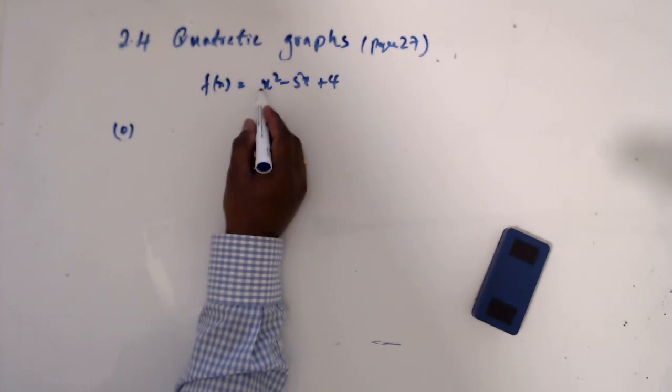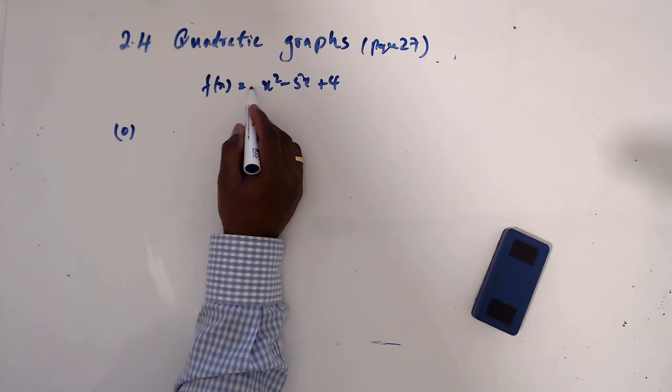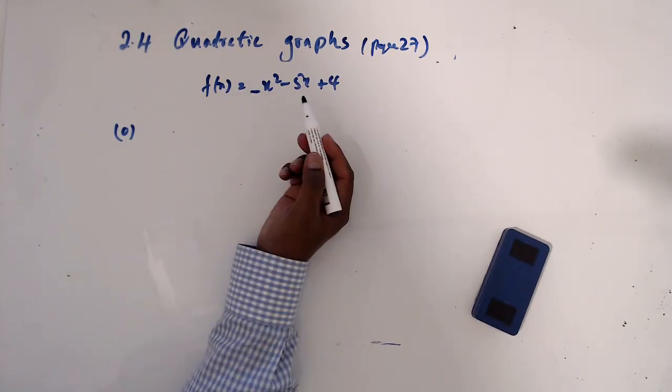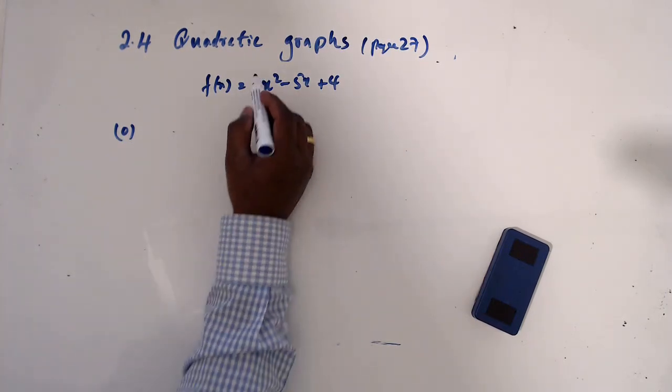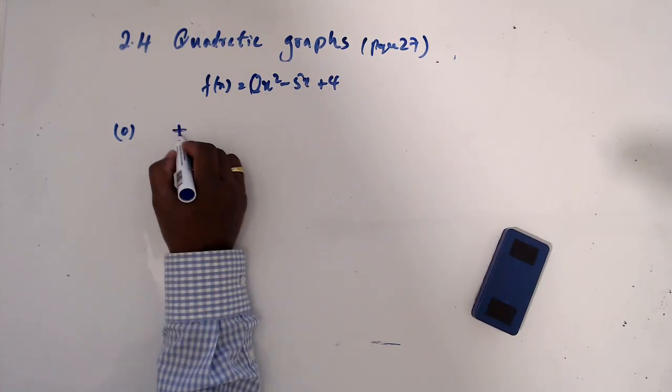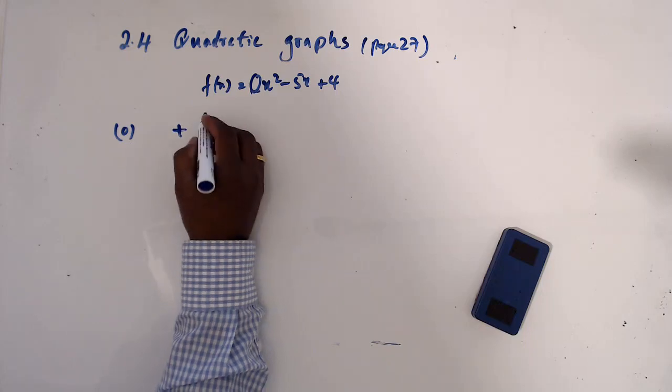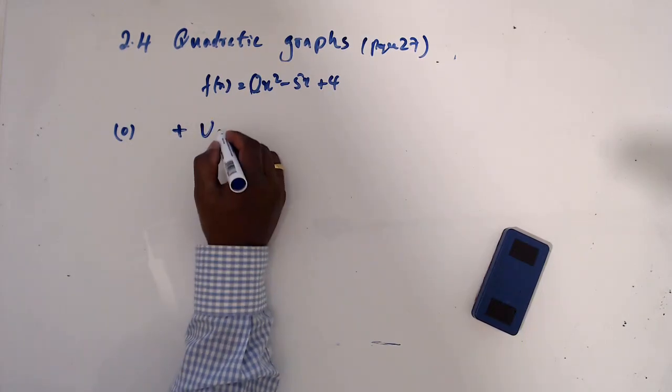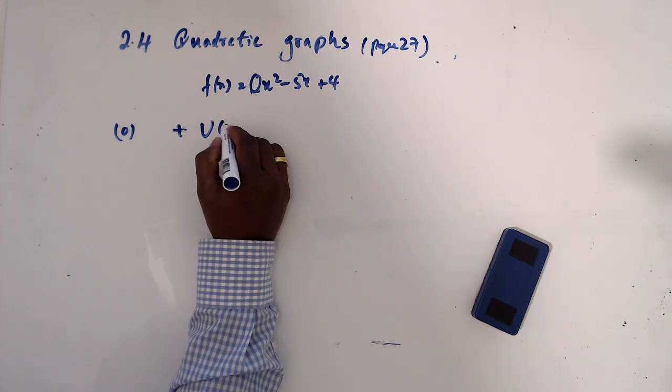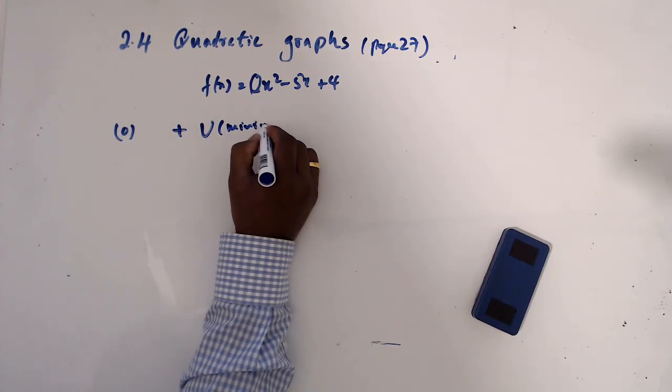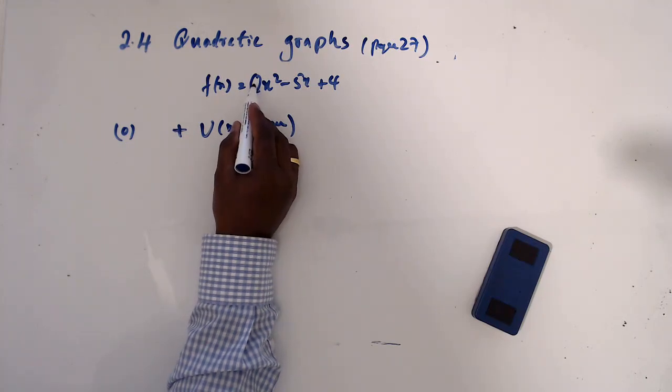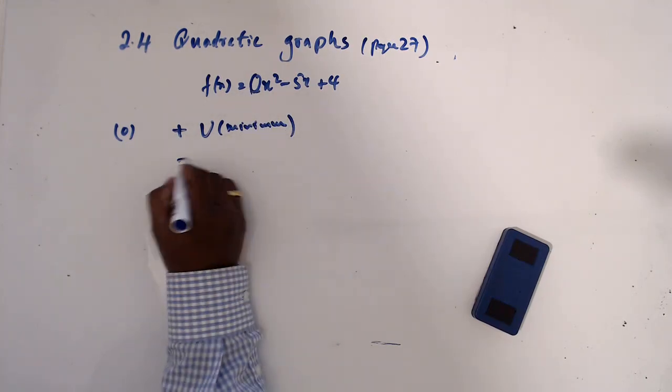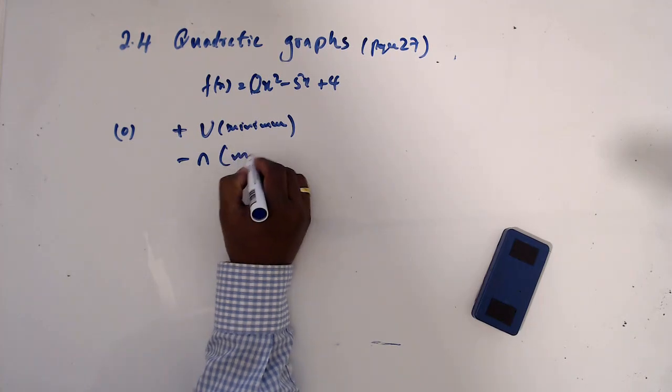Just look at the quadratic coefficient of the x squared term. If you found out that this coefficient is positive, then this graph has a minimum. If you found this coefficient is negative, then it has a maximum.